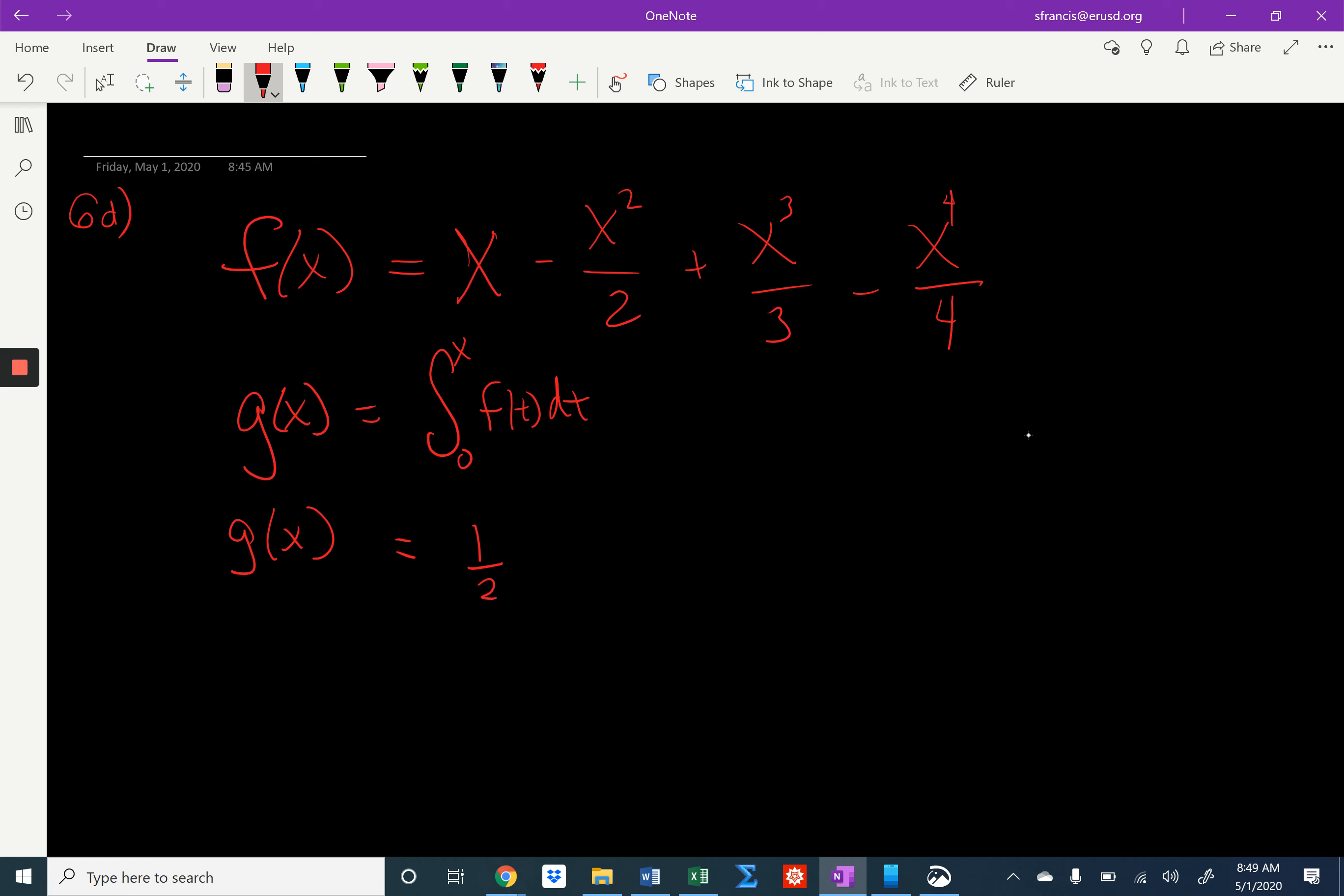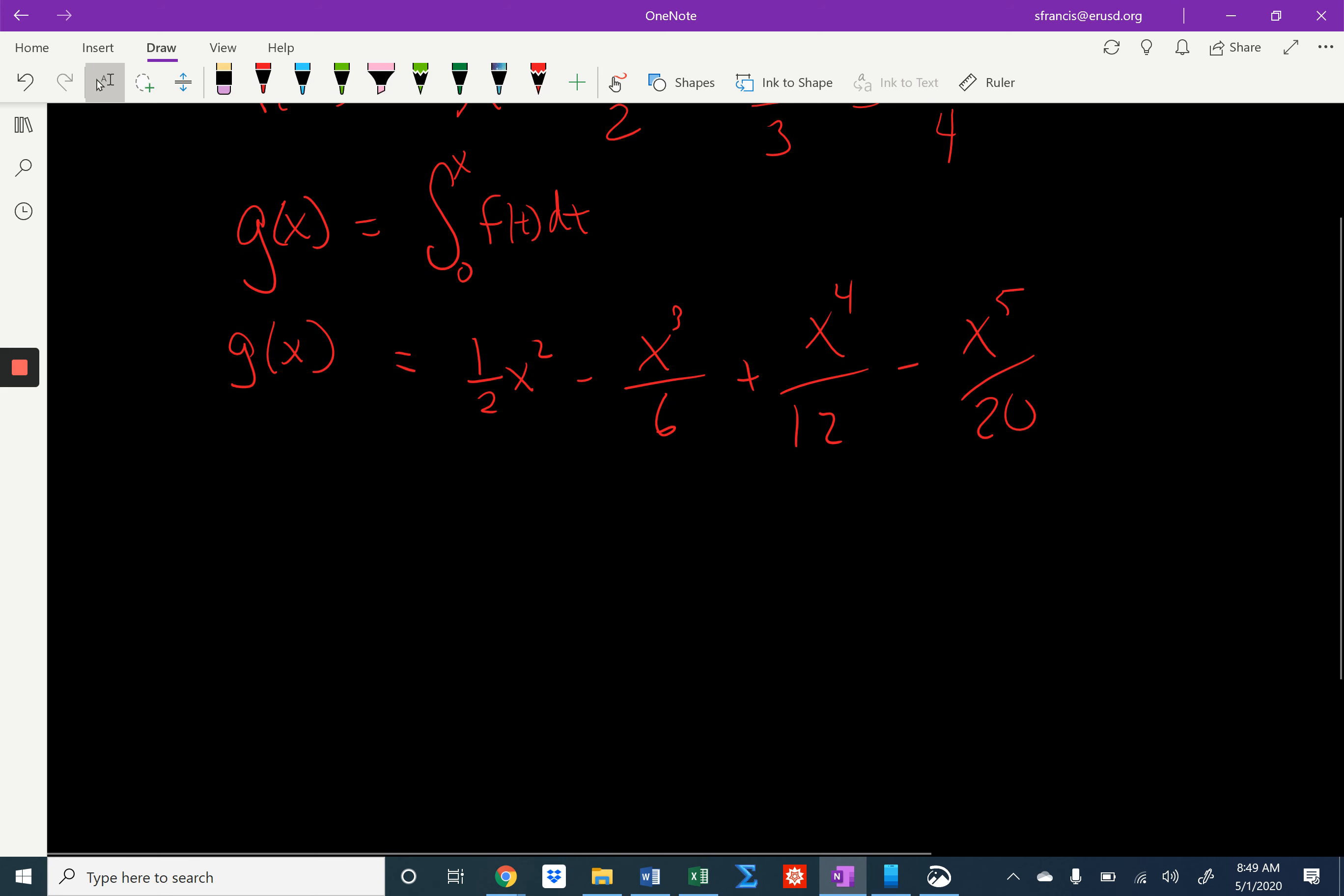So we'll get half x squared minus x to the third over 6, plus x to the fourth over 12, minus x to the fifth over 20. Okay, so this is just the polynomial that we're dealing with, so there are more terms in the whole series, but that's not the important point right now.